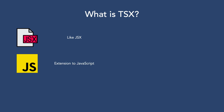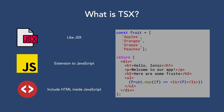JSX, and by extension TSX, is an extension to JavaScript that enables you to include HTML markup directly inside your code. To show you what I'm talking about, consider this code snippet. We start off with an array of fruits. That should appear pretty normal to anyone familiar with JavaScript.